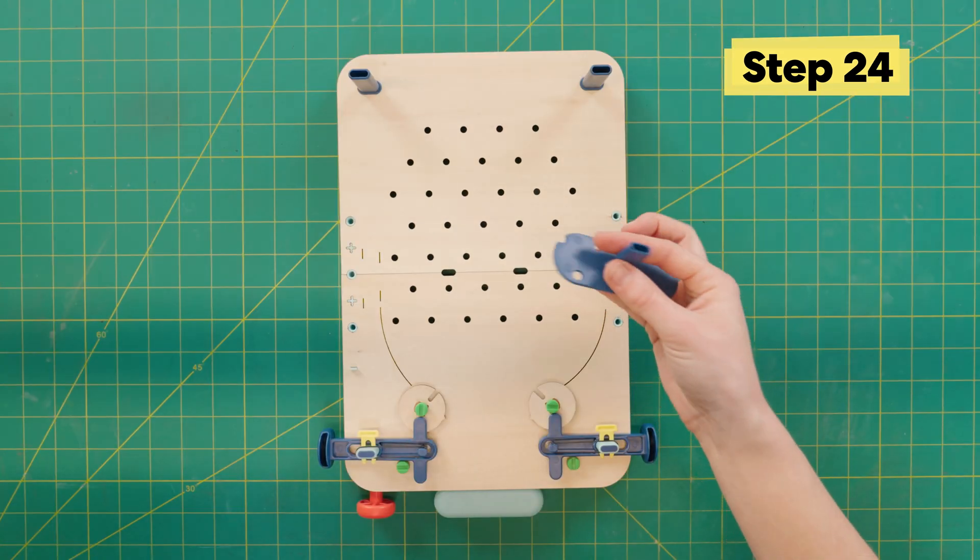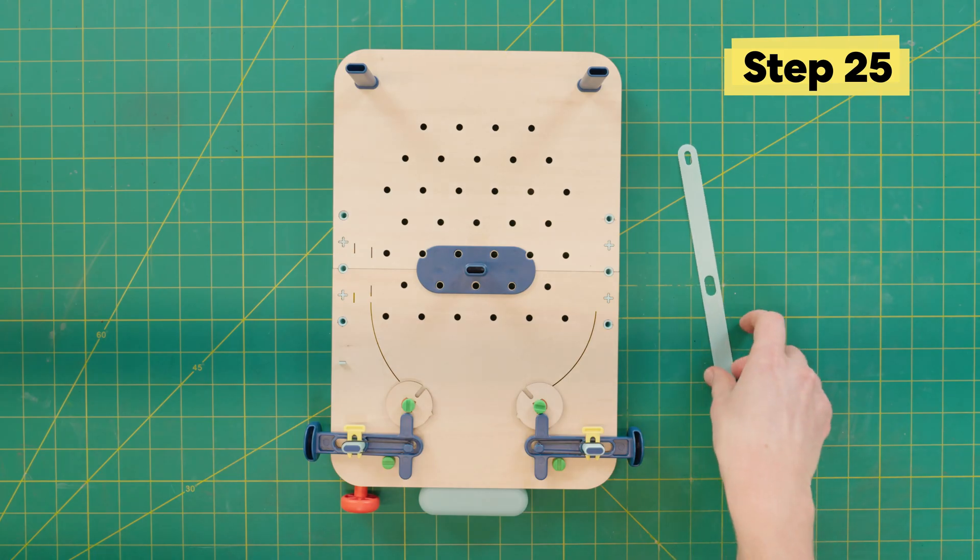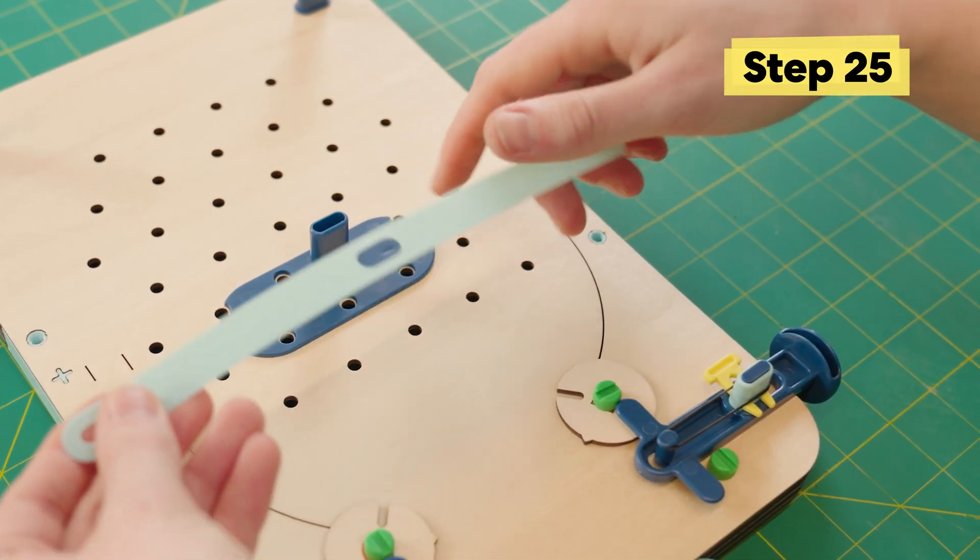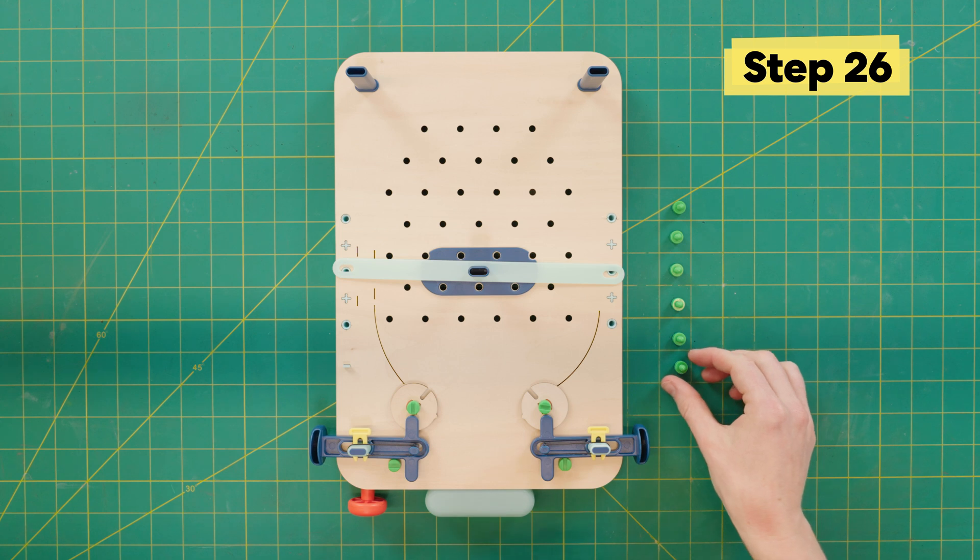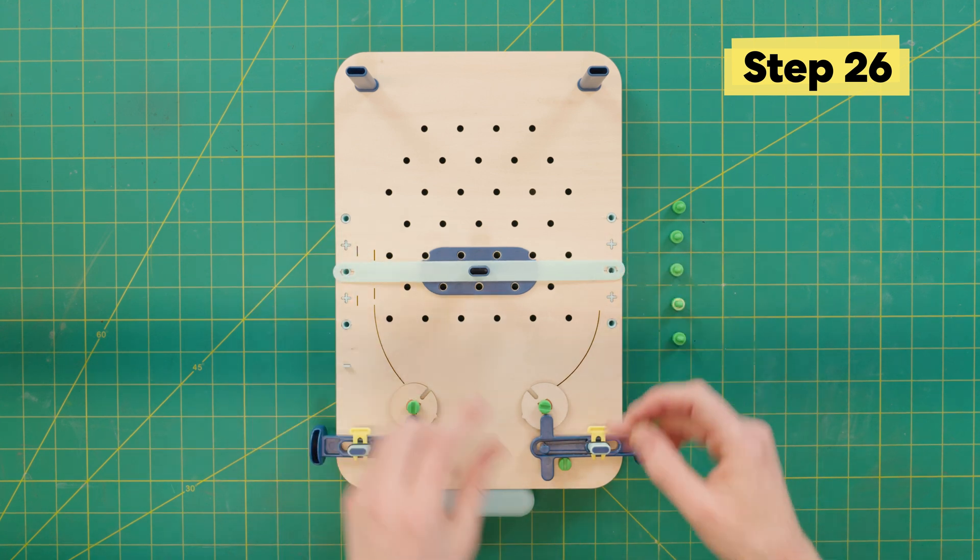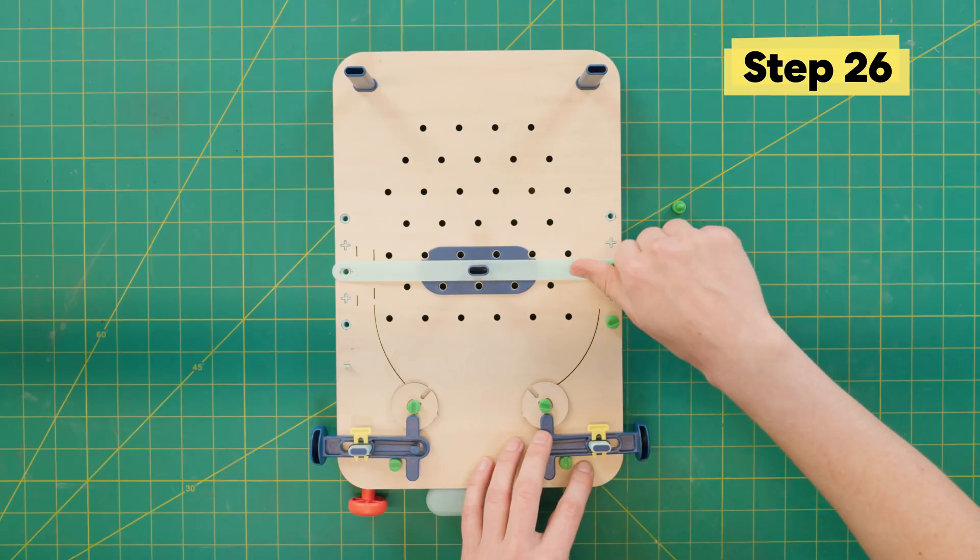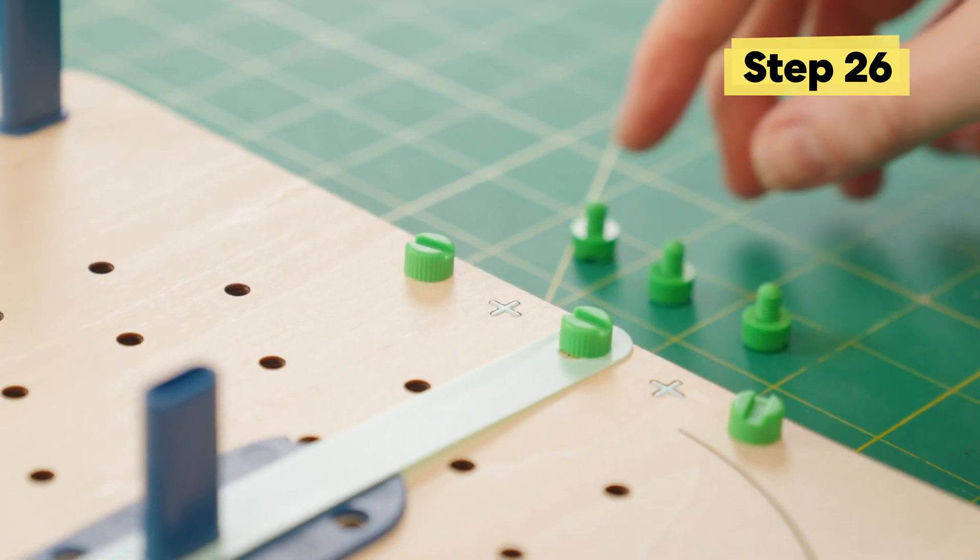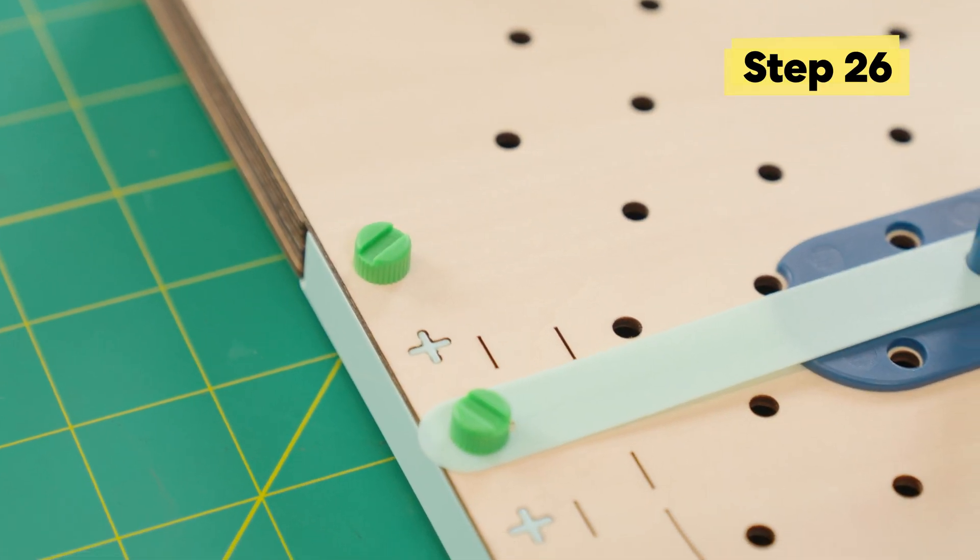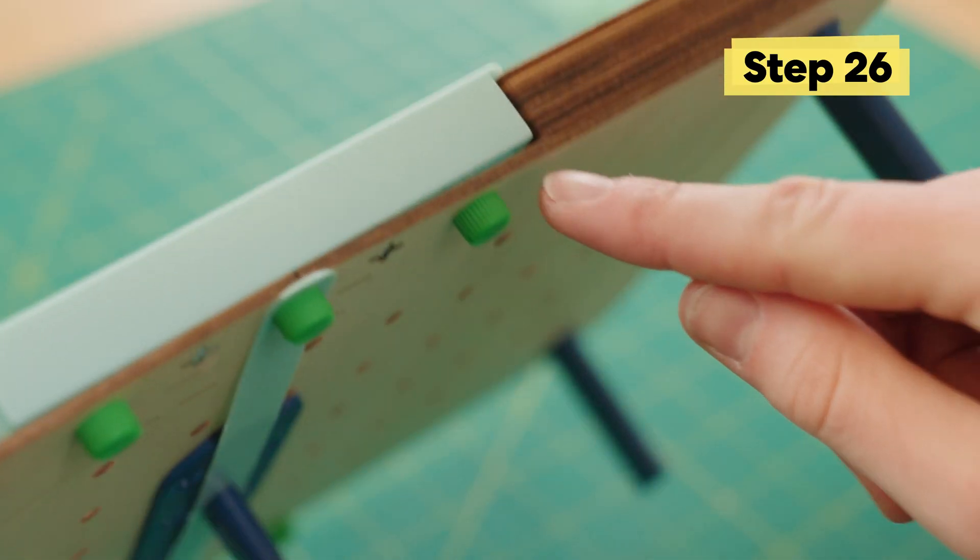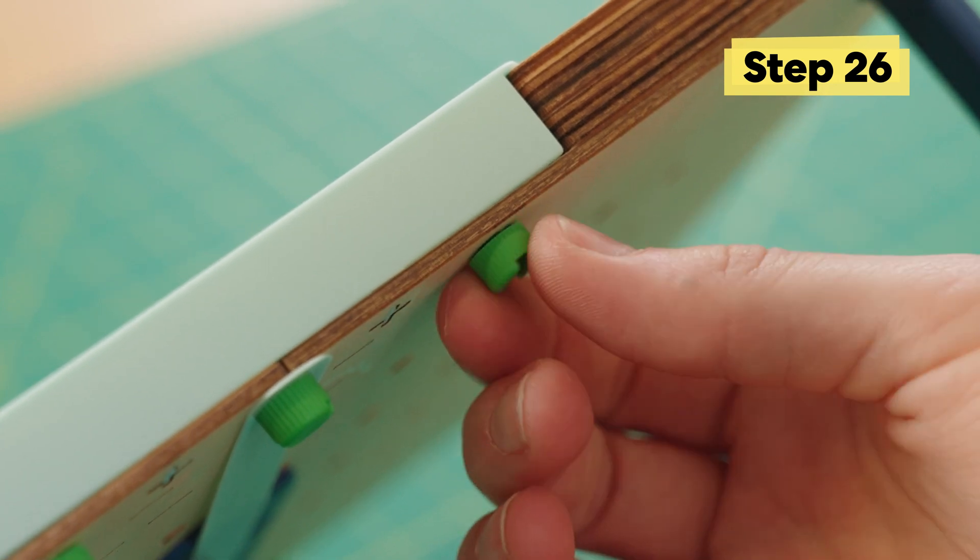Next find this funky looking blue piece and line it up so that all the holes match. This piece gets held on with a big long strap. Slide it down over top and then use a bolt to secure it into place. Before moving on, check it out from the side and make sure that everything is nice and straight and flush. If not, give it a good squeeze and tighten those screws down.